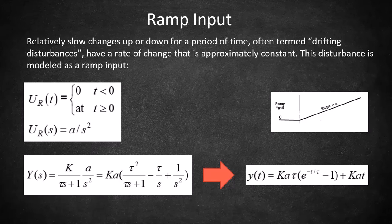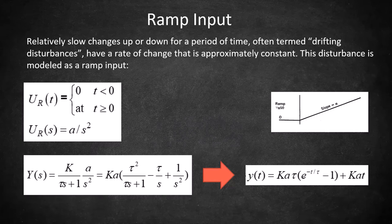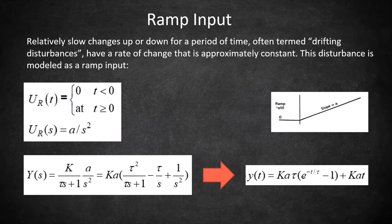Putting this input as a function of time and Laplace transforming it, we will get u of s equals a over s squared, as shown on the left. Plugging this into our first order model and taking the inverse Laplace transform will give us the output function shown on the bottom right.